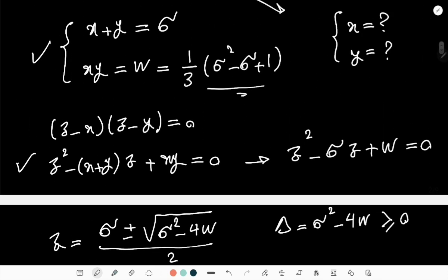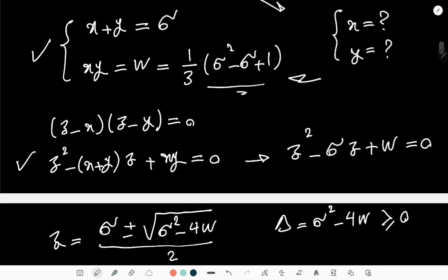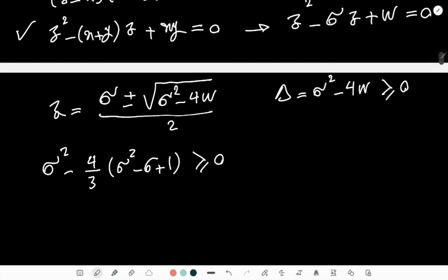This gives me, if I just simplify it, -σ²/3 + 4σ/3 - 4/3 ≥ 0. I'm just going to multiply both sides by -3 and the direction will change. So then I get σ² - 4σ + 4 ≤ 0.